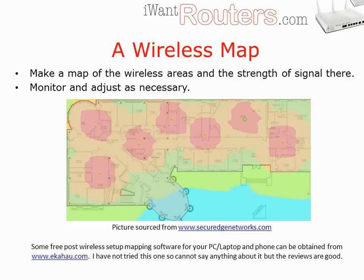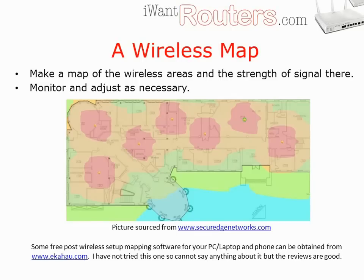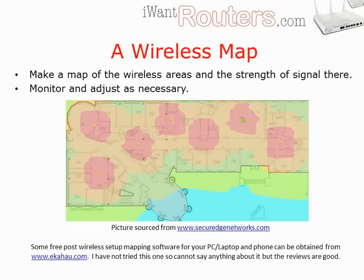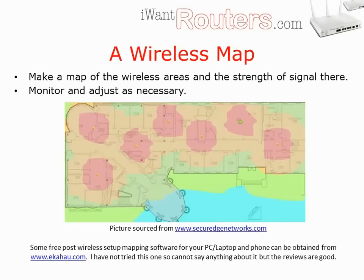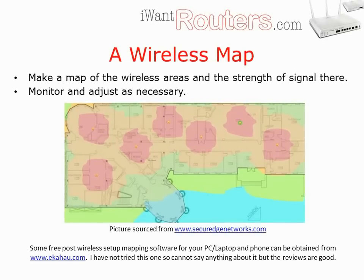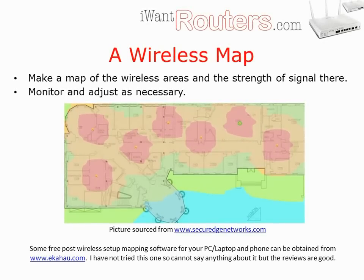Once you have everything up and running, make a rough map of the wireless areas and the strength of signal there. Monitor and adjust as necessary by resiting access points, using different aerials, adjusting aerial positions or increasing the number of access points — the phone app is really good for this. It's like baking a cake: adjust the ingredients until the wireless network works as you need it. Some free post-wireless setup mapping software for your PC, laptop and phone or tablet can be obtained from www.ekahow.com.